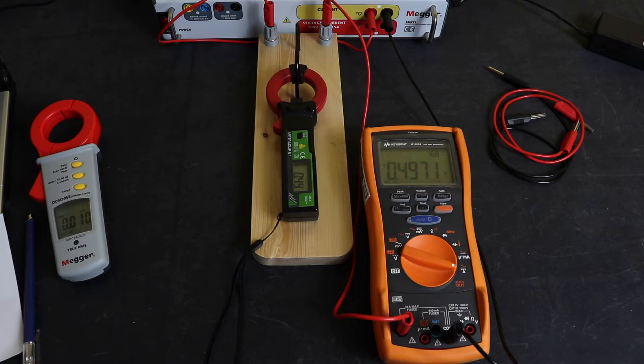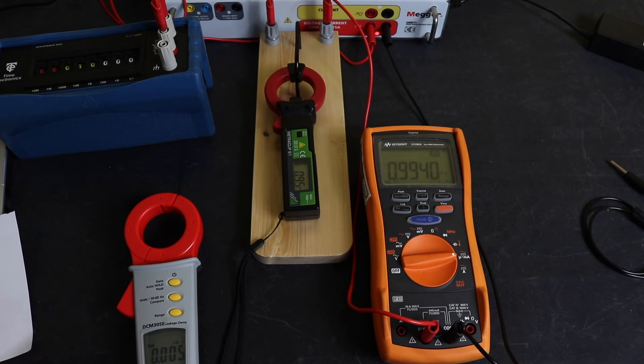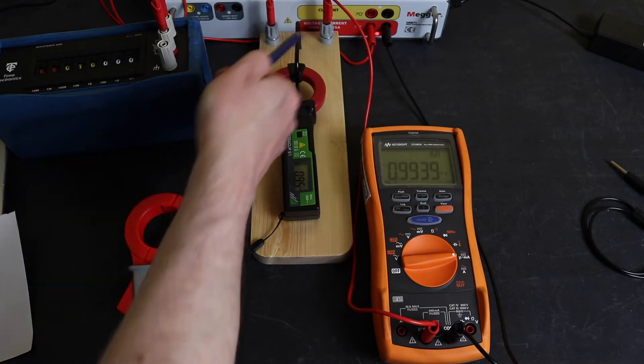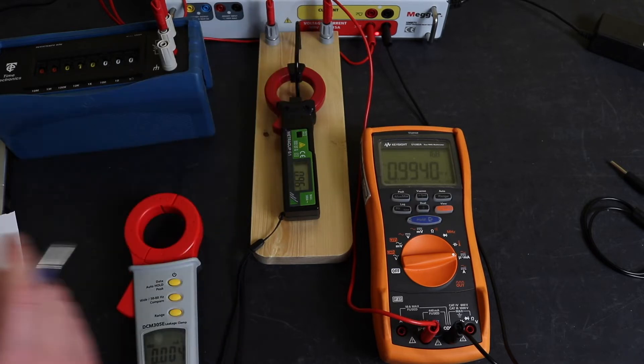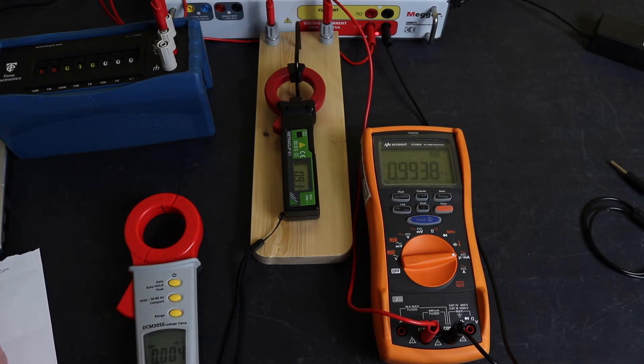We'll just do a quick rearrangement so I can get down to the lower test currents. Okay, so we've reset everything. I've got a resistor bank in series now to cut the current down. We are on 1 milliamp, which is 0.9937, and we're reading 0.96 on the Gossen.